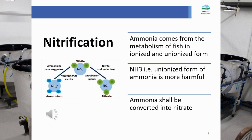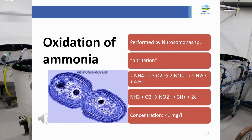Ammonia comes from fish metabolism and can occur in ionized or unionized form. The unionized NH₃ form is more harmful, and therefore ammonia must be converted into nitrate, which is much less toxic to fish. Nitrification is a two-step process. The first step, carried out by autotrophic Nitrosomonas bacteria, oxidizes ammonia into nitrite. Nitrite is still harmful for fish and must be maintained below 1 milligram per liter. Nitrification occurs for both ionized and unionized forms of ammonia.